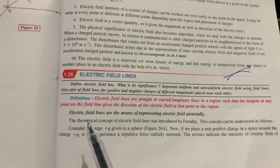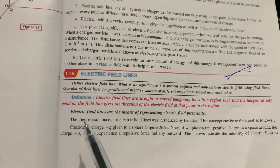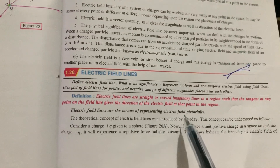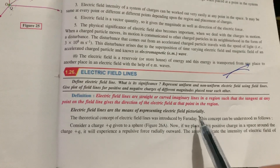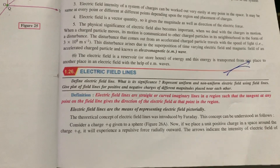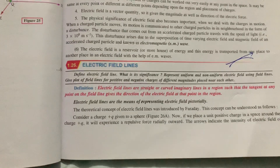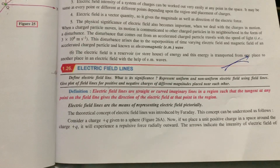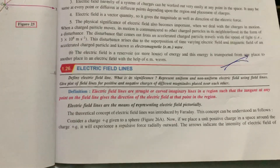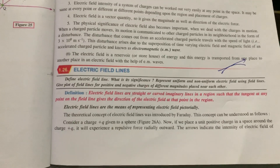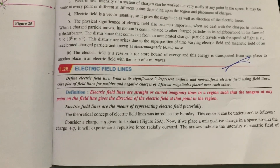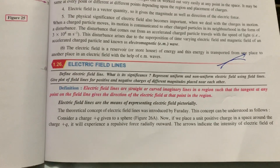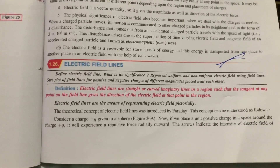Electric field lines are a means of representing the electric field pictorially. So if I want to show the electric field pictorially, I will take the help of electric field lines. This is basically a theoretical concept which was actually introduced by Faraday.